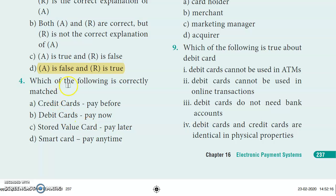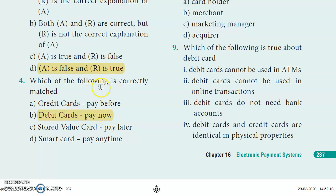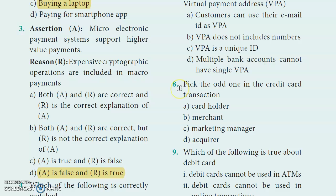Fourth question: Which of the following is correctly matched? Credit cards pay before, debit cards pay now, stored value cards pay later, smart cards pay anytime. Debit cards are 'pay now' — that is the correct usage. So debit cards is the correctly matched answer.